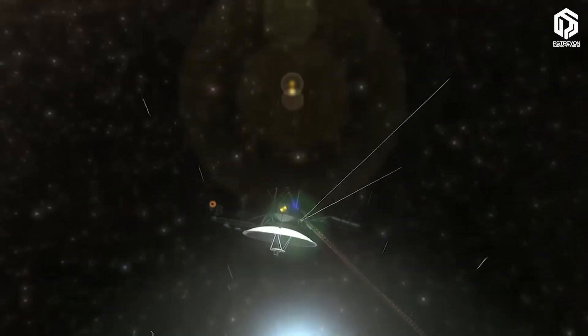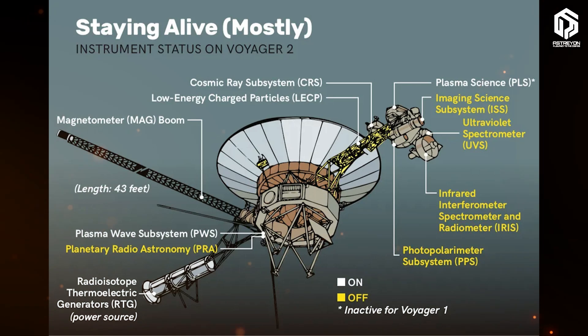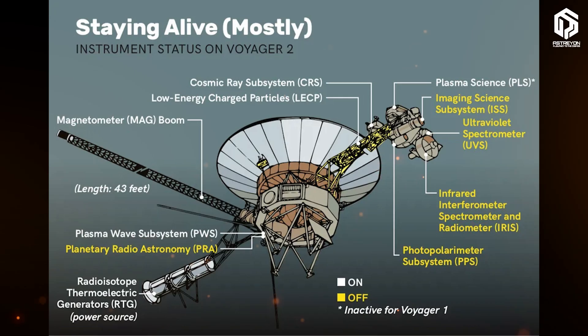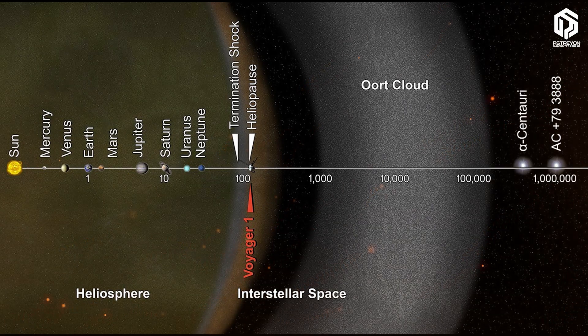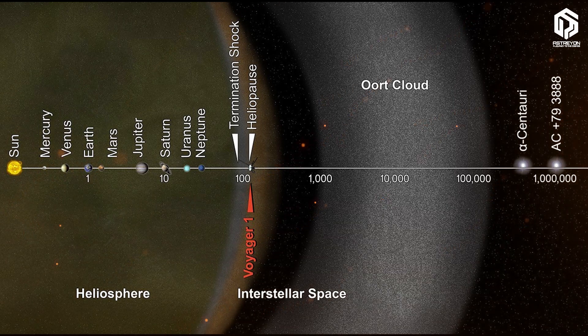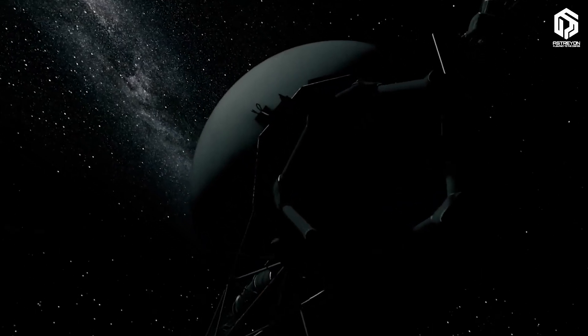How did this probe cover such a distance? Its current speed is about 17 kilometers per second, that's over 61,000 kilometers per hour. Its power comes from radioisotope thermoelectric generators, which convert plutonium-238 into electricity, but this source weakens over time, and now less than half of its original power remains. Voyager 1 has traveled over 24 billion kilometers, equivalent to 166 astronomical units from the Sun, where one astronomical unit is the distance from Earth to the Sun.